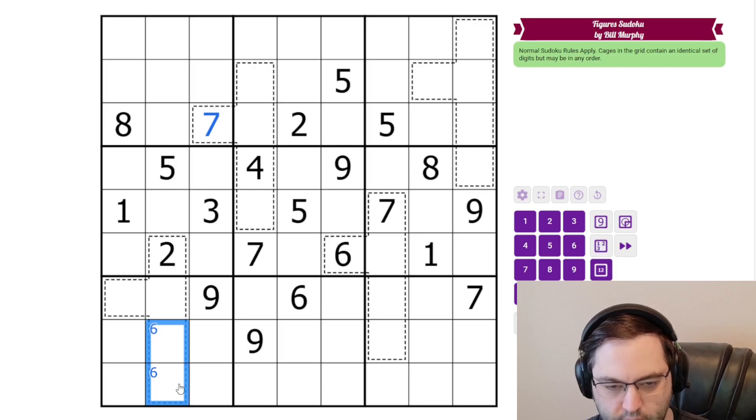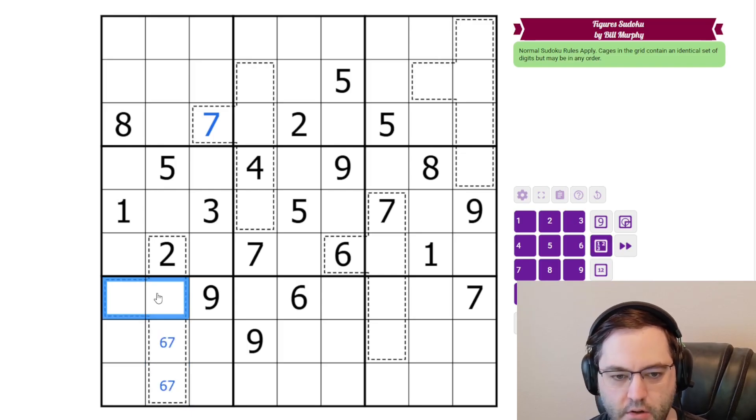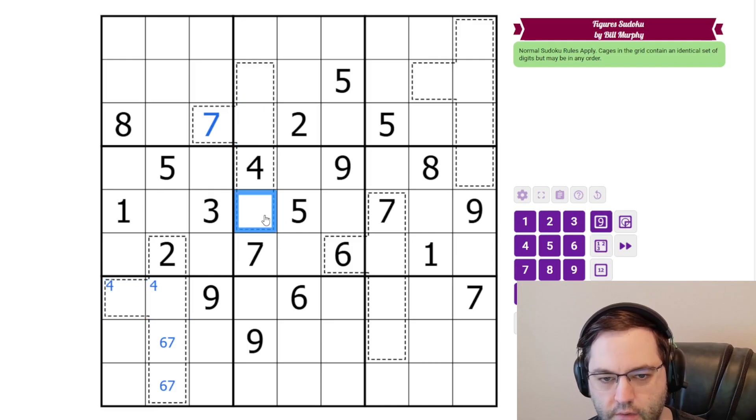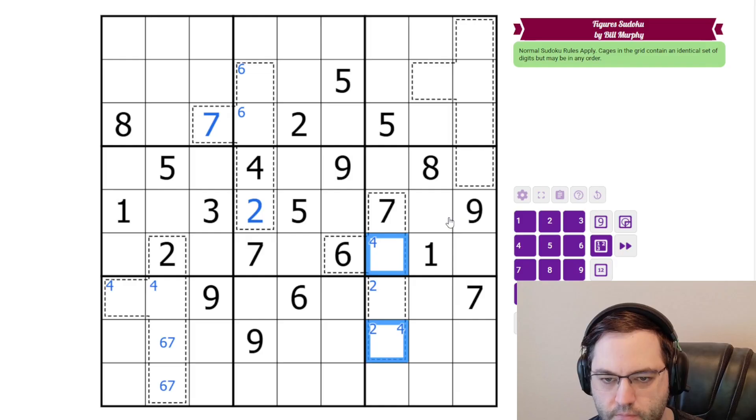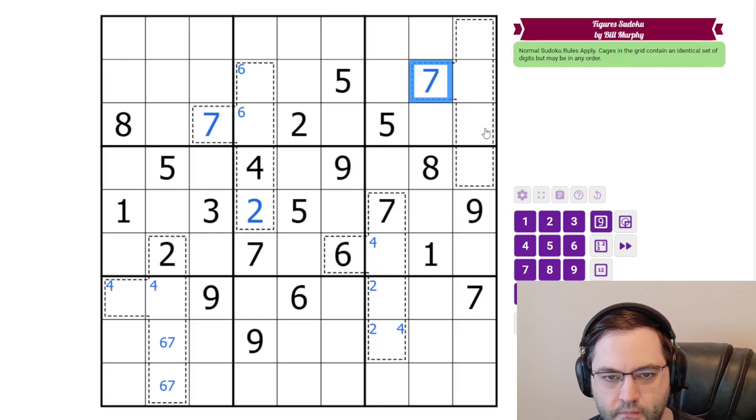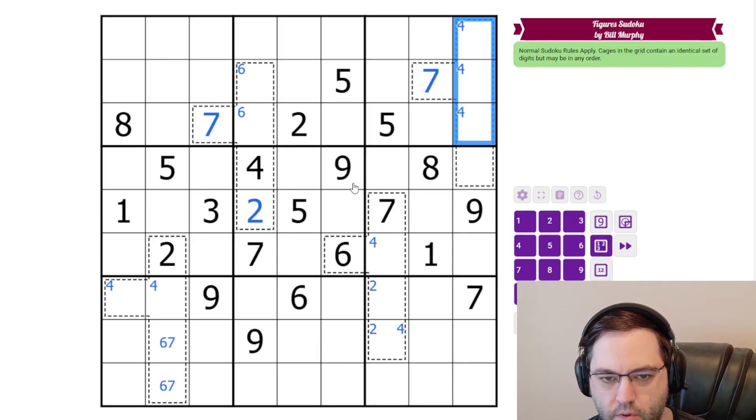Seven also can't go in these, so this is actually a six-seven pair, which means four is in one of these. Two can't go in these, so this is a two. And one of these is a six. This can't be two, so two's in one of these. This can't be four. These can't be seven. The four is going to be up here. I'm going to mark that because they're all in the same box. Four can't go in that cell.